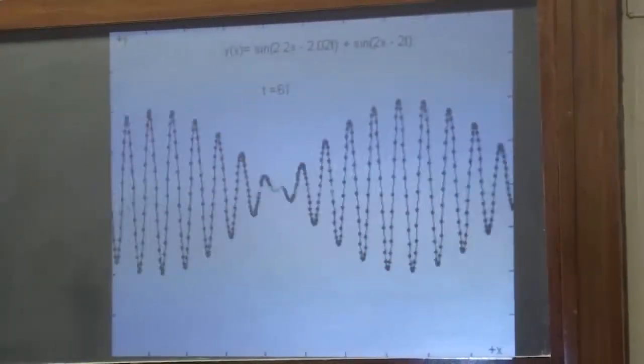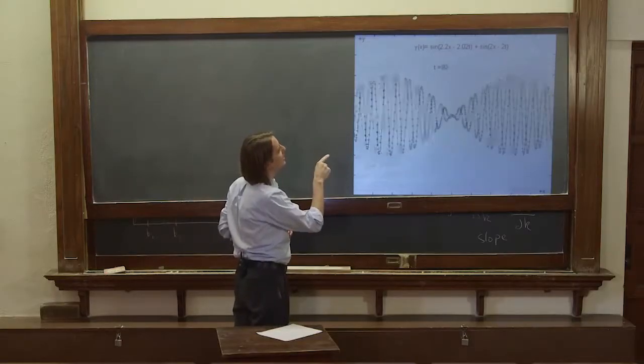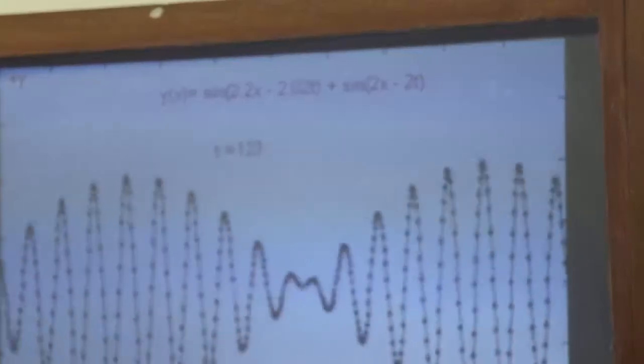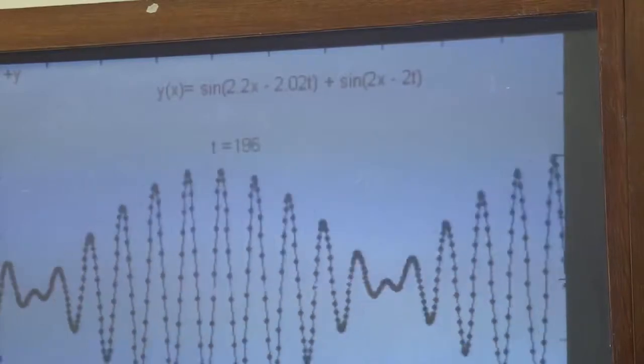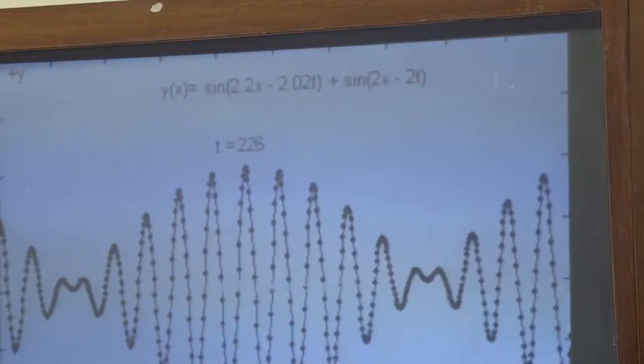So here you can see it's sine 2.2x minus 2.02t. So you divide that, that's a little bit more than one. And the other one is sine 2x minus 2t, so that one has a velocity of one. So we have two sinusoids going at slightly different speeds.